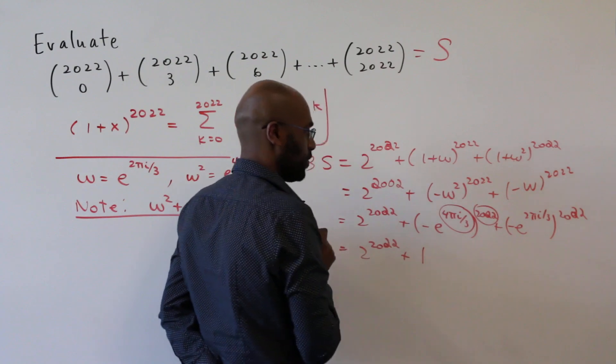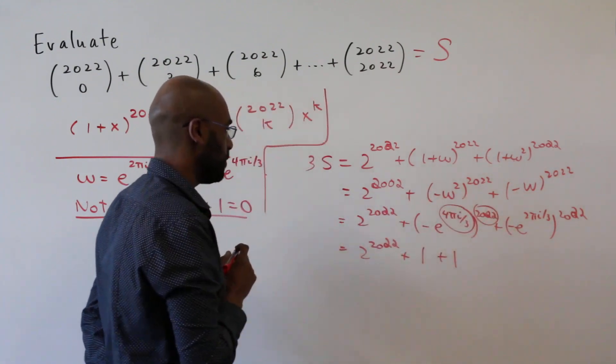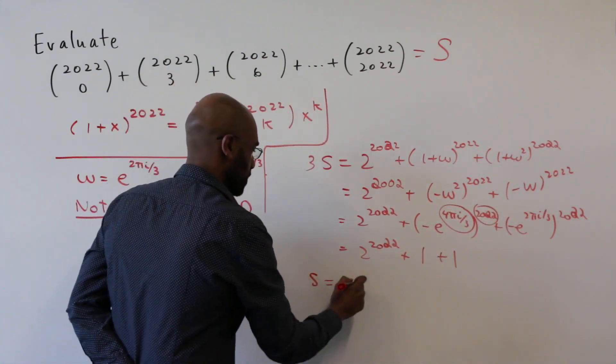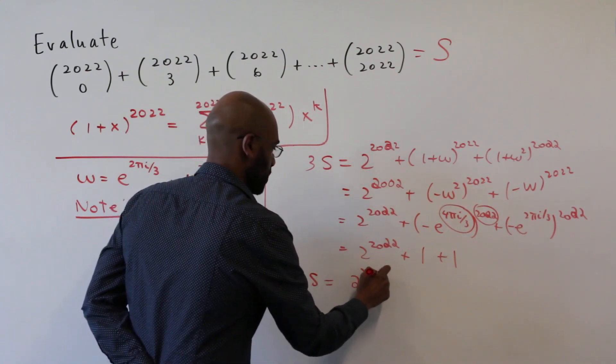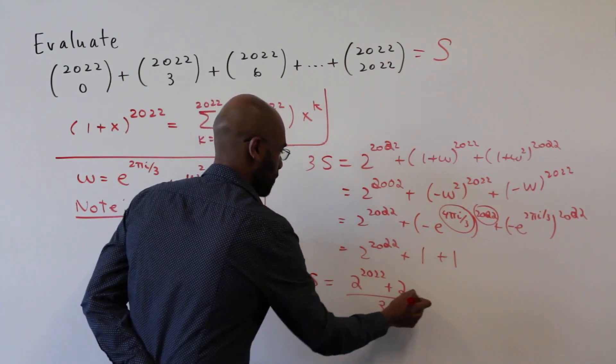So this thing will be an integer multiple of 2 pi i. And so here, we'll end up with the value 1. And similarly here, we'll get the value 1 as well. So S then is 2 to the 2022 plus 2 divided by 3.